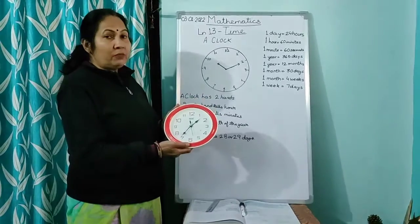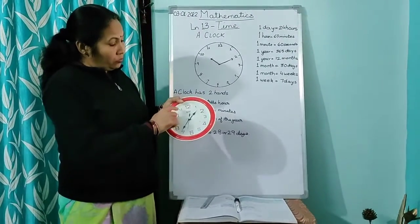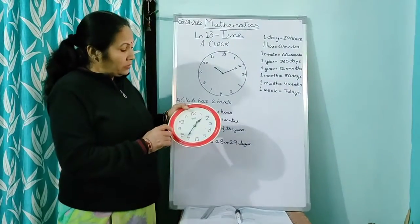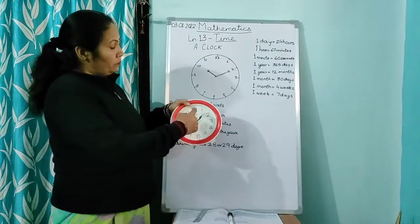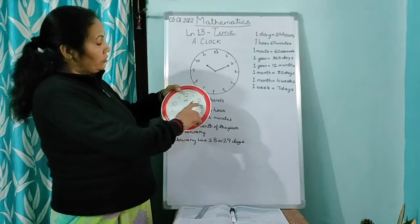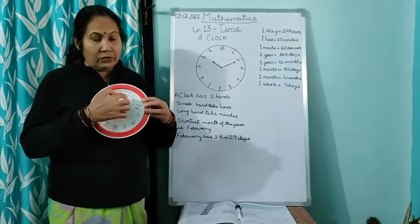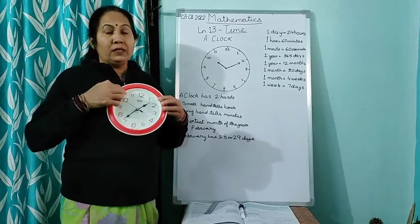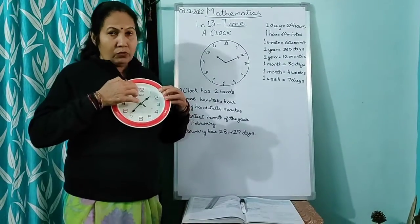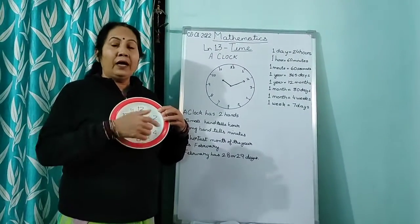Now children, I am going to explain here. I will show you that you have 12 numbers in the clock. And how does it move? It moves from left to right. If I stand like this, it will move from left to right. This is called clockwise. And when it moves from right to left, then it is called anti-clockwise.